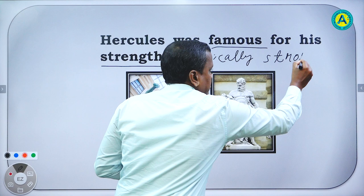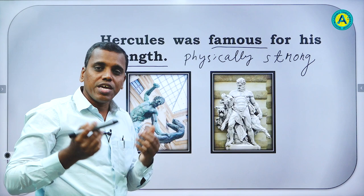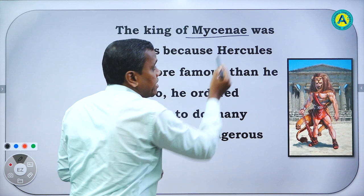Look at the old pictures — they are taken from museums. He was very strong physically and that's why he was famous. Now, the king of Mycenae — an old kingdom — was jealous.